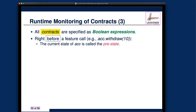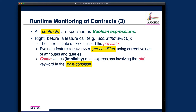Before a feature call, we should check the pre-state value against the precondition. At the end of the method, or when the feature implementation is executed, we have to check the postcondition, which relates the pre-state value and the post-state value. That is why, before we actually execute the implementation, we must cache or memorize all the involved pre-state values. Later in the lecture, we'll see exactly how this caching process is conducted.